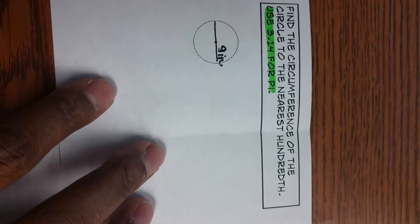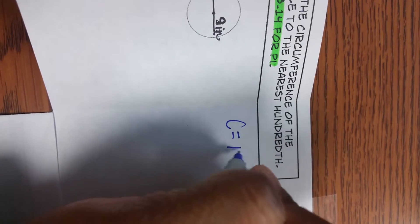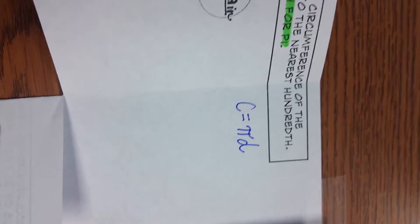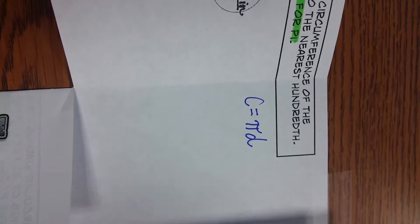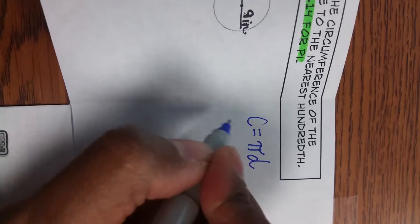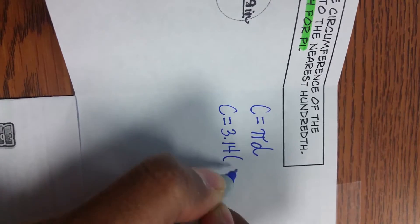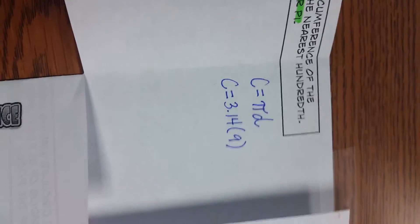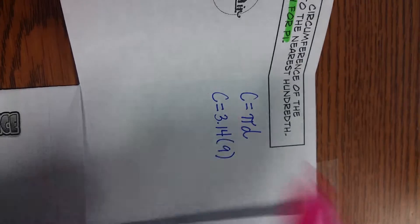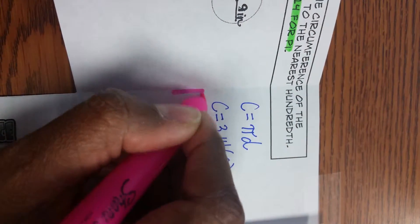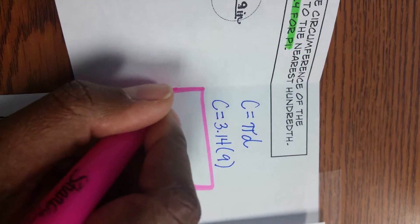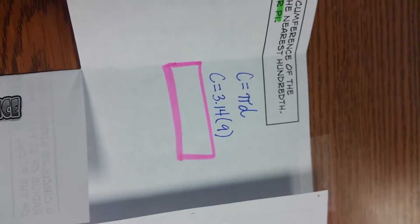Now since we have the diameter, we're going to use the formula c equals pi d. Now all I'm going to do is just plug my number into my formula c equals 3.14 times 9. And what I want you to do is I want you to solve that for me, give me an answer.